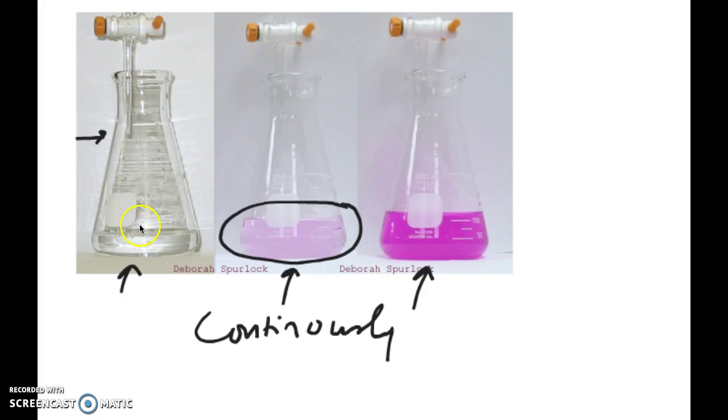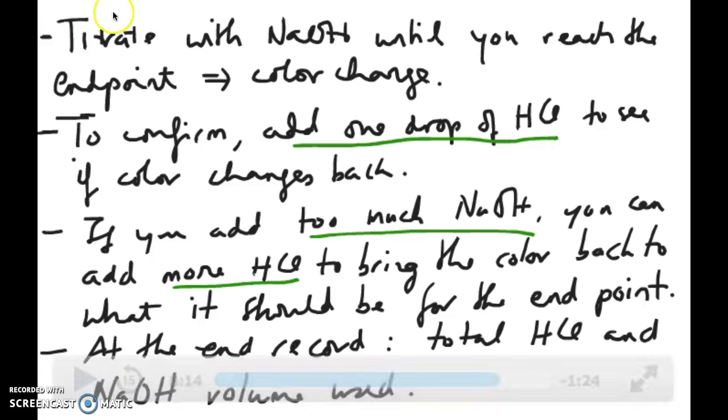Now one thing that is very important while you're titrating is you want to make sure that as you're titrating that this flask is being swirled. So you're continuously mixing the solution that are in here. You don't want to just add the acid and let it just stay at the top of the solution while the bottom of the solution is not mixing with the acid. So you want to shake this and swirl it. Swirl the flask continuously as the acid is being added. That's the way to make sure that the reaction is happening. Remember what I said earlier, you want to titrate with your NaOH until you reach the endpoint, which means that greenish color, right? That's what we're shooting for for the bromophenol blue indicator.